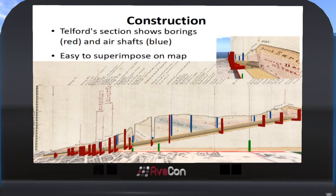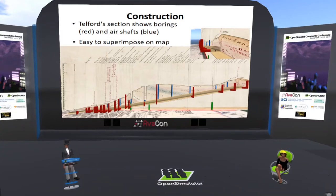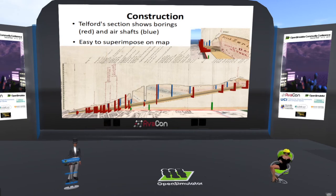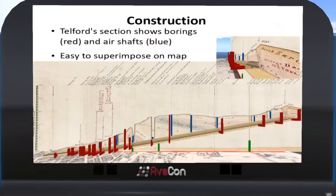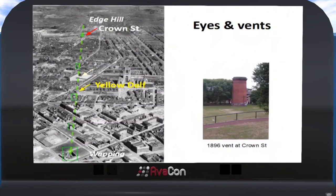What's nice about working in OpenSim is that you can use it to merge different data sources. Here I've superimposed this on a contemporary map drawn from 1836, so we can see not only the profile — which is exaggerated in the vertical scale — but we can see how it relates to the actual location. You can see, for example, how the tunnel in one place reaches virtually to the surface. This is actually a quarry called Yellow Delph, where people could actually walk into the tunnel. You can see the position of Yellow Delph on the track of the tunnel, which goes under the city of Liverpool from Edge Hill down to Wapping.